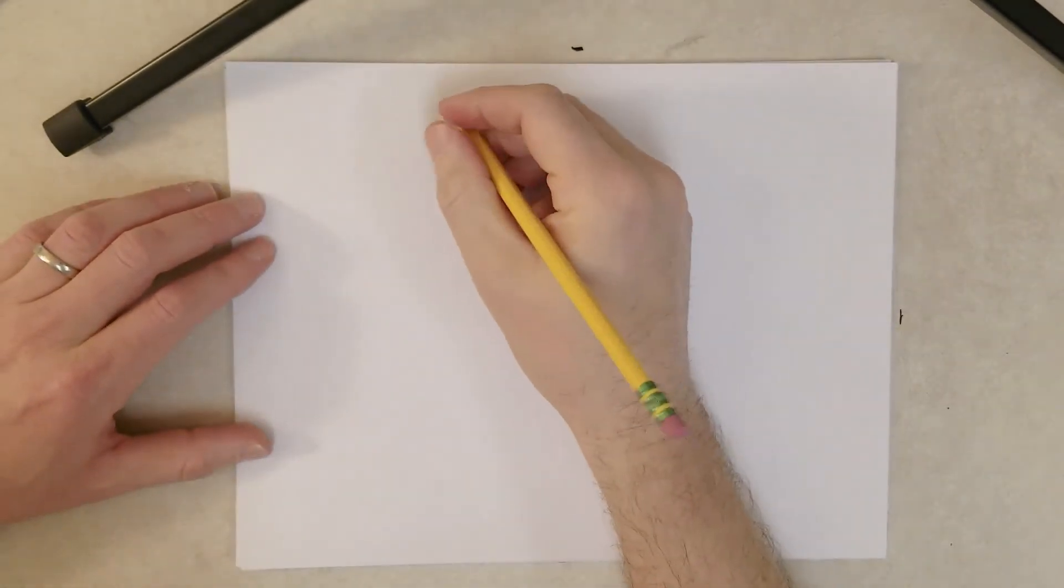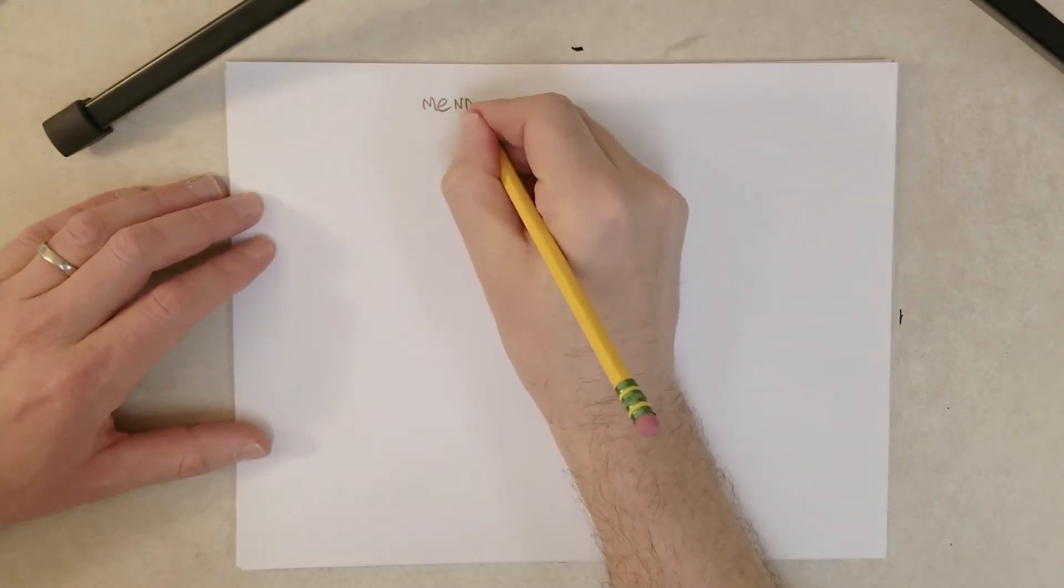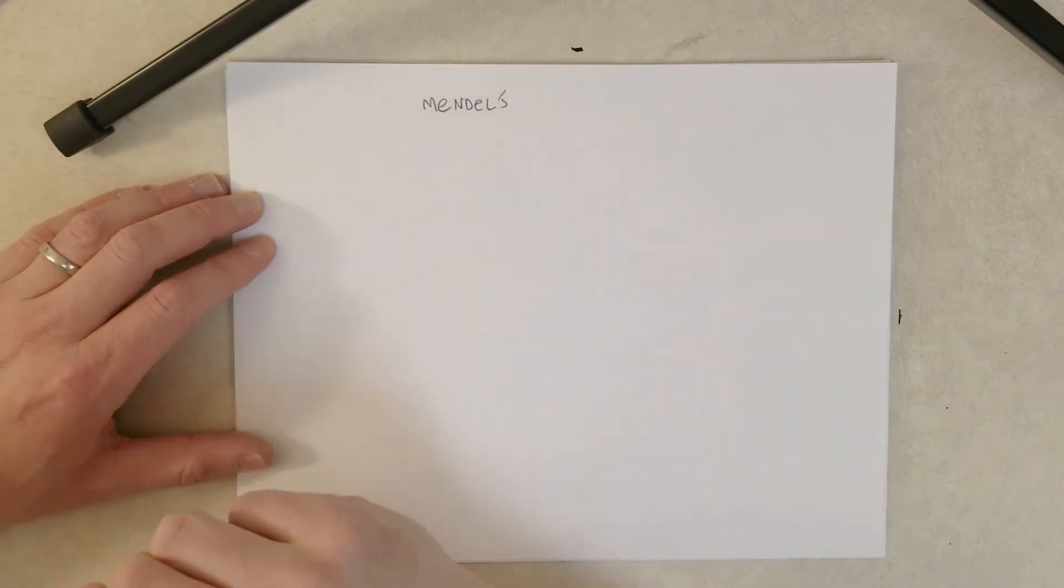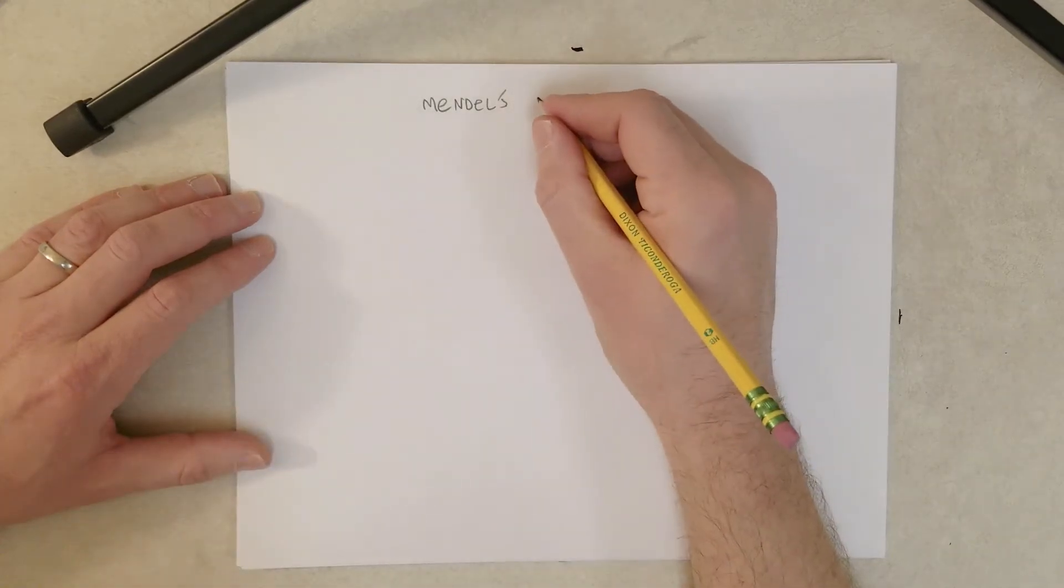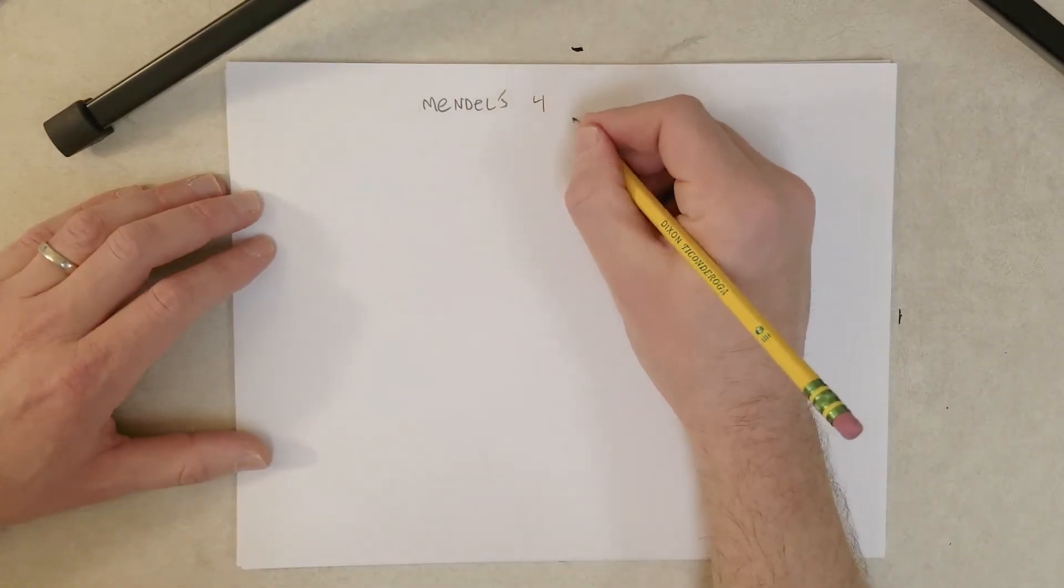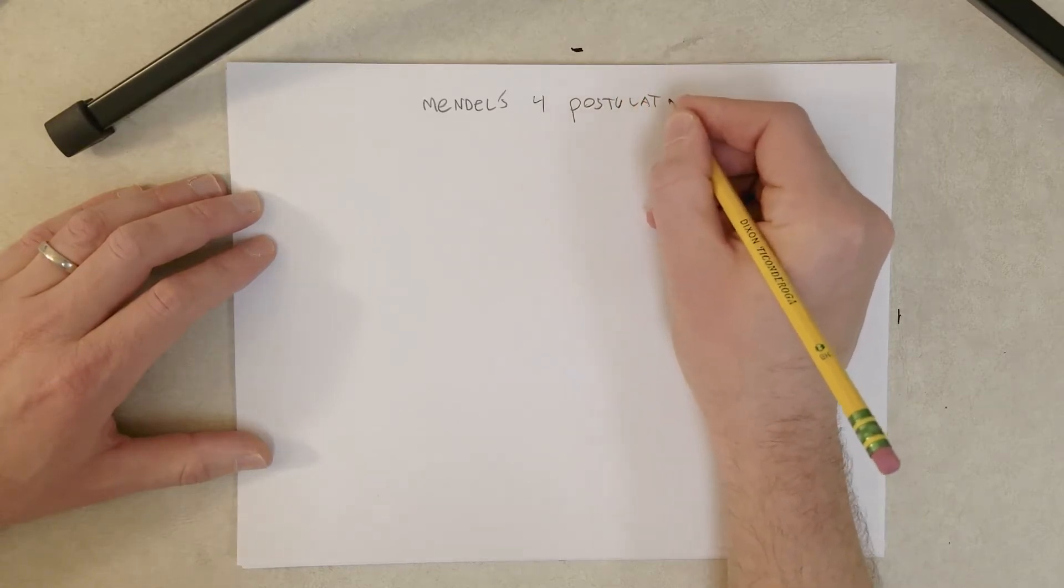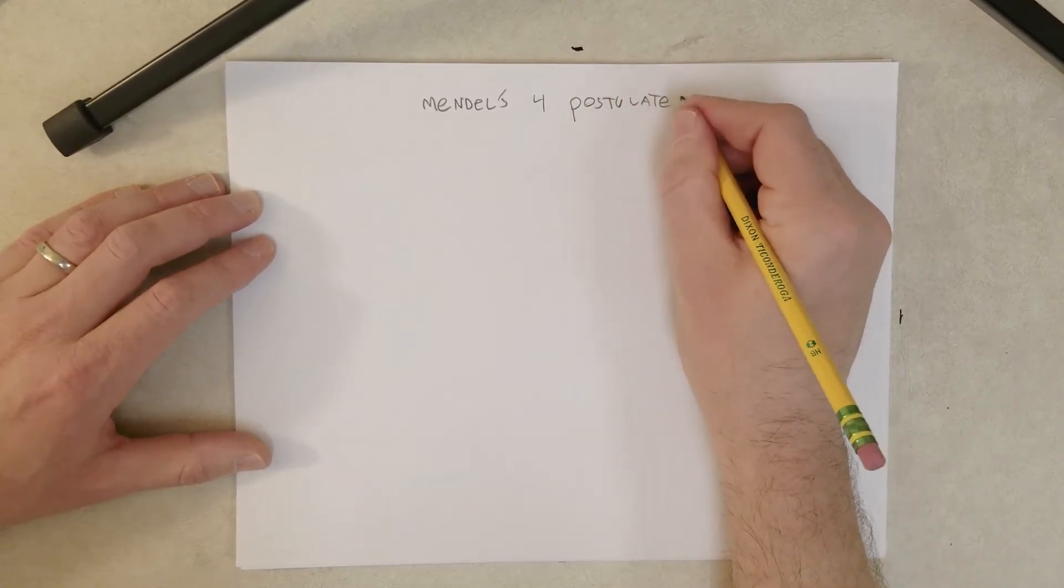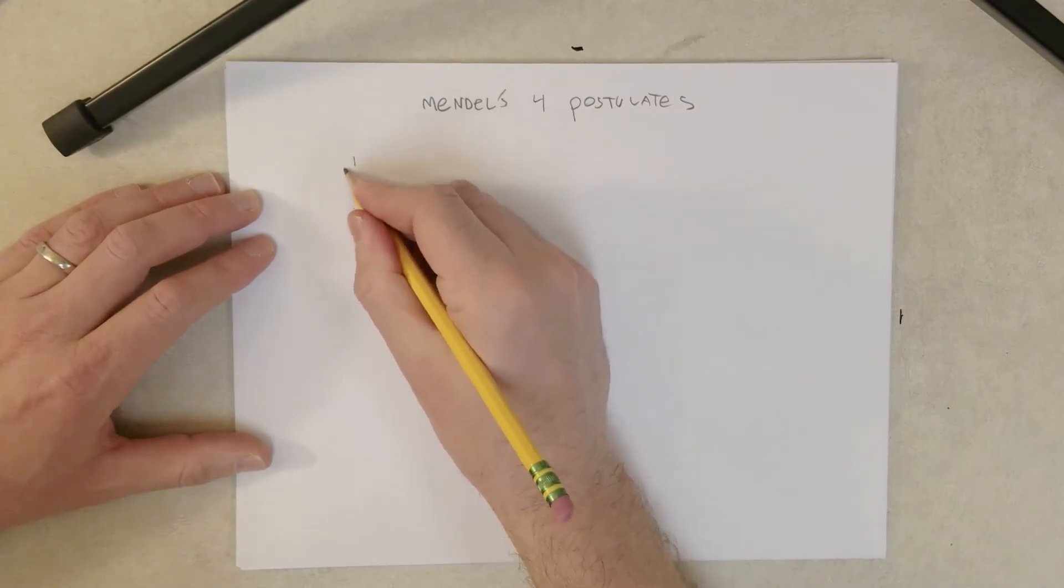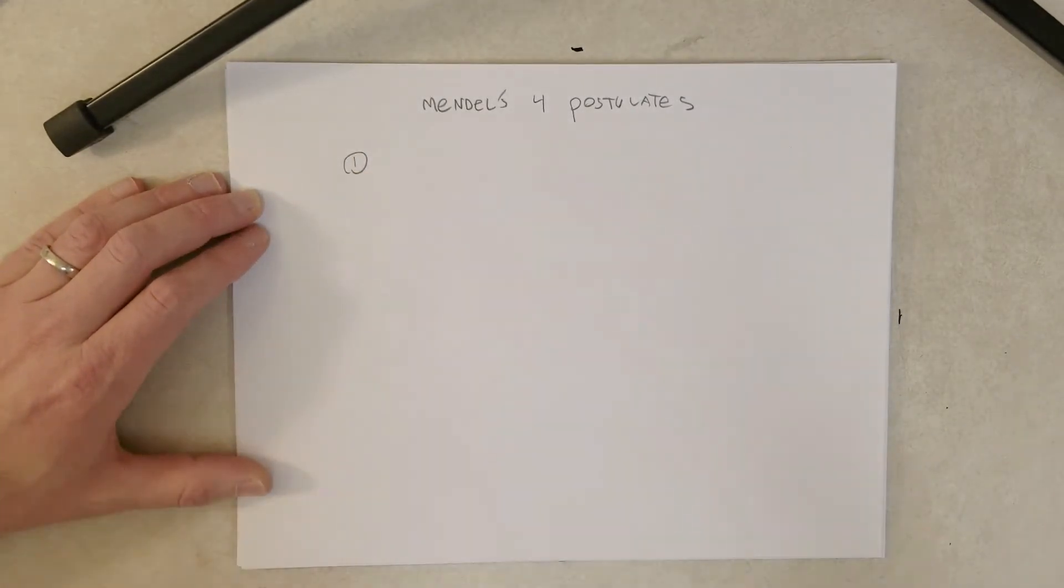So before we go on, let me address Mendel's four postulates. Sometimes these are called laws. I think most genetic textbooks are moving away from describing these as laws. Instead, we're describing them as postulates. So, Mendel's four postulates on inheritance or heredity. He came up with these four postulates to describe the observations he made in doing his crosses.